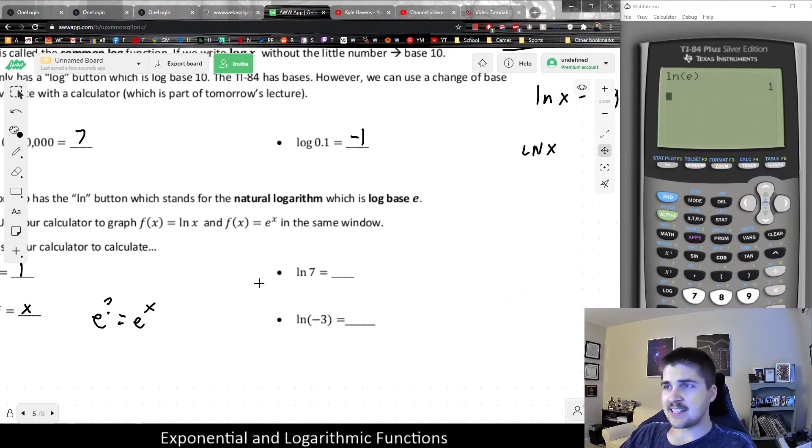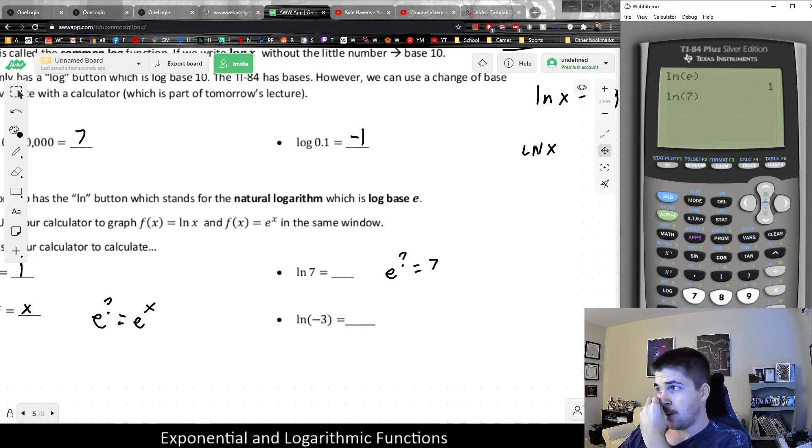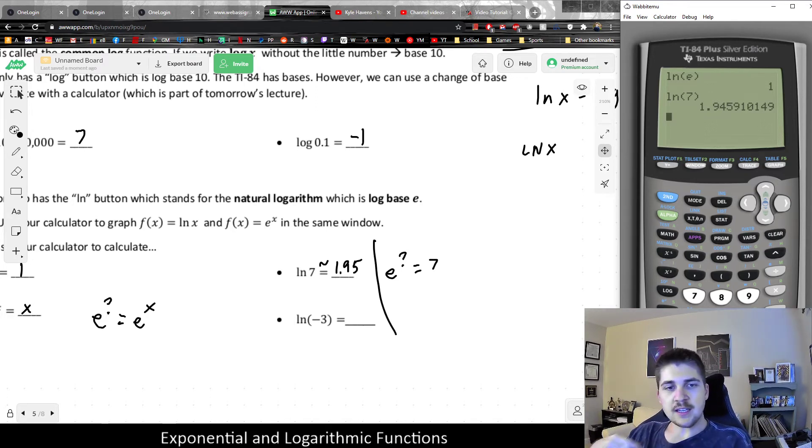But sometimes, since e is an irrational based number, say I wanted to know e to what power is going to make 7. Most of the time, the answer to this is going to be very complicated. That's one of the reasons why having a calculator is so helpful here. If I want to know e to what power makes 7, I could just take the natural log of 7 in my calculator, and it would tell me that's approximately 1.95.